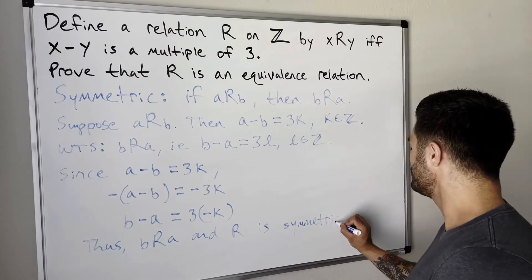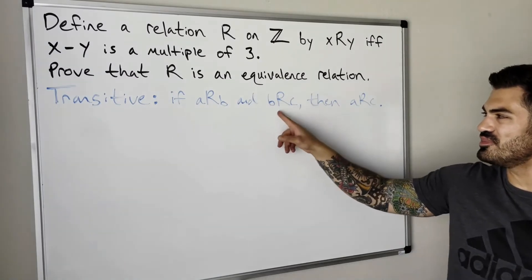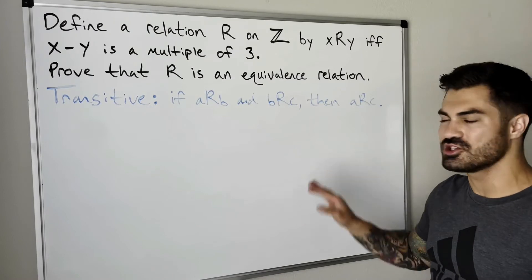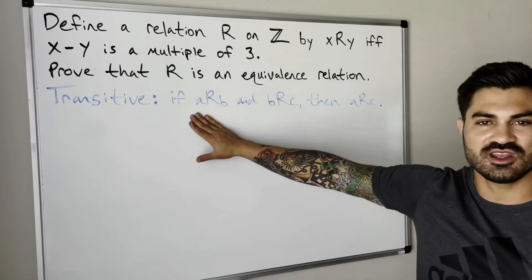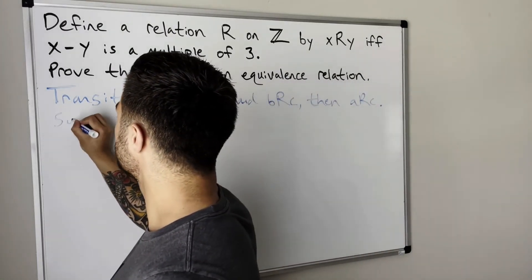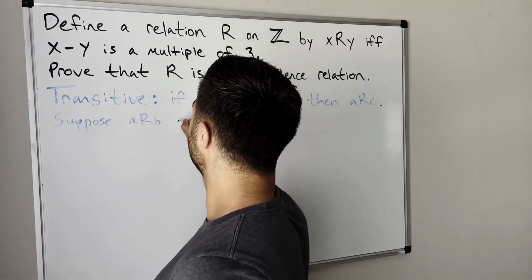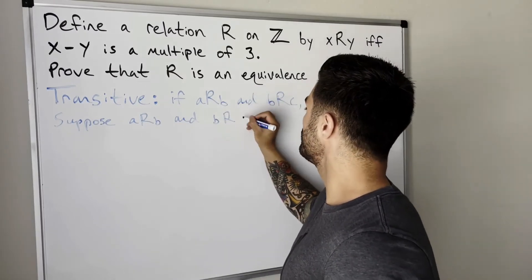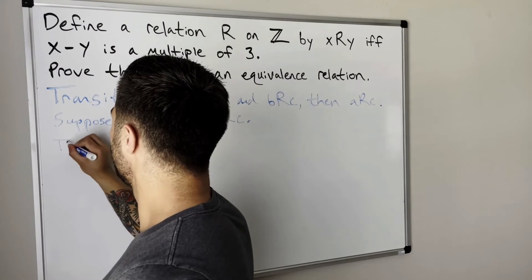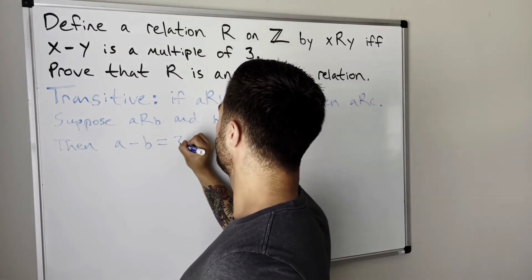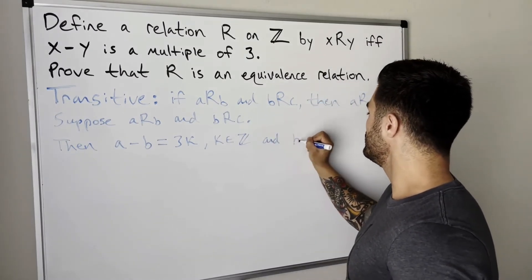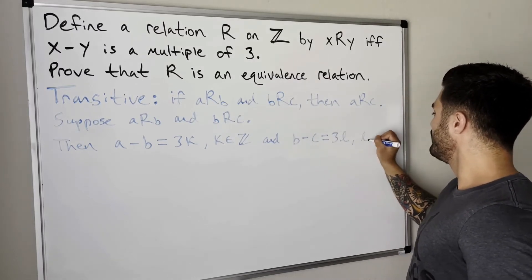Now let's show transitivity. Transitive means that if a is related to b and b is related to c, then a is related to c. This is similar to symmetric in that it's a conditional statement. We assume the if part is true and show the then part follows. Suppose a is related to b and b is related to c. That means a minus b equals 3k, where k is some integer, and b minus c equals 3l, where l is some integer.